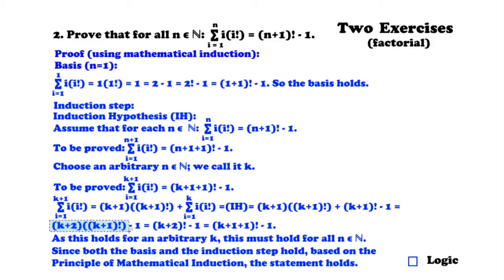We have (k+1)·(k+1)! + (k+1)! − 1, which equals (k+2)·(k+1)! − 1 = (k+2)! − 1 = (k+1+1)! − 1, which is exactly the right-hand side. Since this holds for an arbitrary k, it holds for all n. Since both the basis and the induction step hold, based on the principle of mathematical induction the statement holds — QED, indicated by the small square at the end.